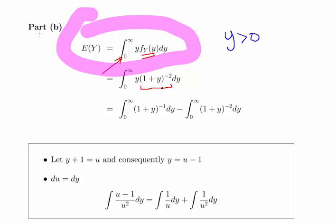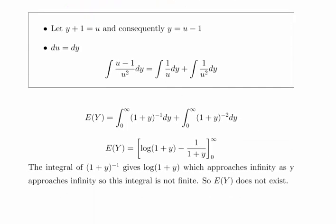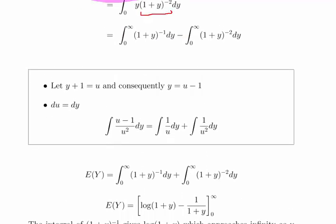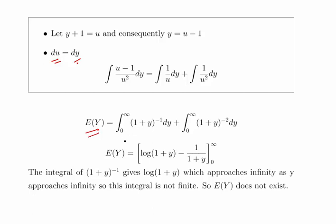This takes a little bit of guile with regard to integration by parts and integration and stuff like that. Essentially, what we're going to do here is just to help you through it. It's substitution in this case. So using integration by substitution, we can re-express it as follows. Using this integration by substitution technique, we get breaking it up. The expectation of Y is the integral of 1 plus y to the power of minus 1 plus 1 plus y to the power of minus 2. And when we integrate that out, we get two expressions.